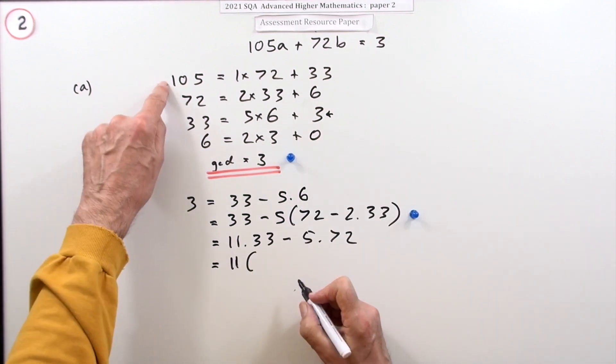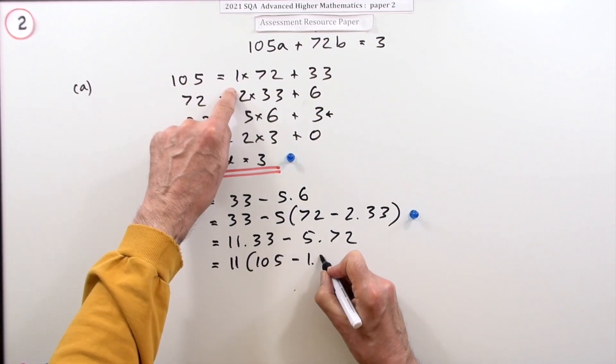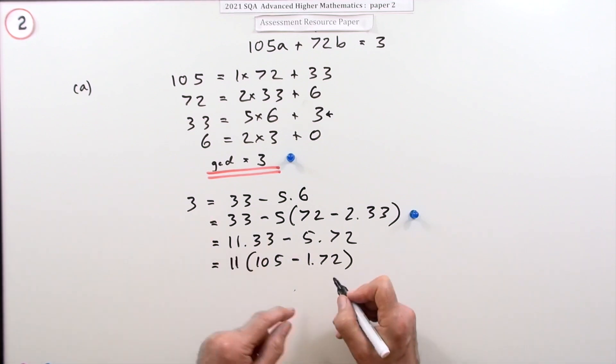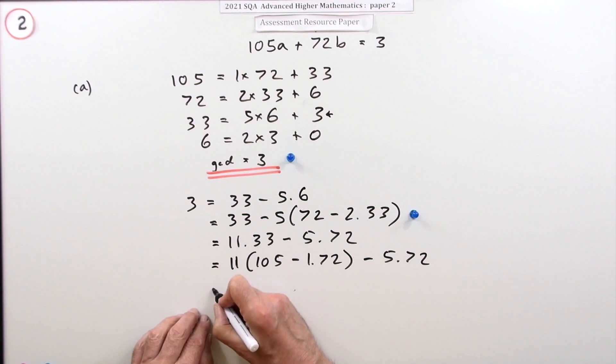That's 11 lots of 105 minus one lot of 72. I want to specifically see that one. Take away five lots of 72. Almost there.